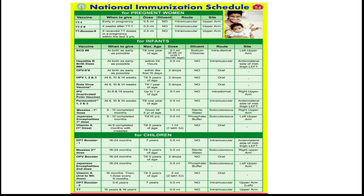Tetanus Toxoid dose 2 (TT2) is given 4 weeks after TT1 — that is, 1 month after the first dose. The dose is the same: 0.5 ml, intramuscular, upper arm.